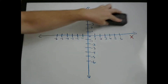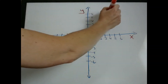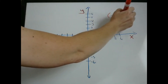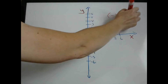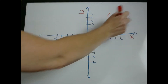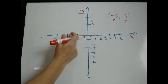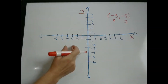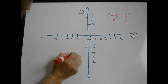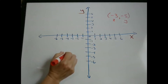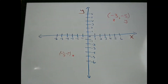We'll do one more. If you have (-3, -5), we're going to go negative 3 on the x, and since y is negative, we're going to go down 5. So it's going to be right here — negative 3, negative 5.